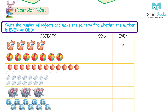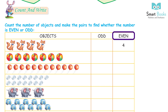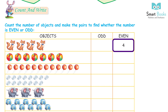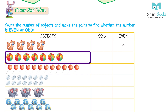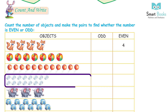Count and write: count the number of objects and make pairs to find whether the number is even or odd. Four squirrels — four is an even number. Seven balls — seven is an odd number. Twelve balloons — twelve is an even number. Fifteen tablets — fifteen is an odd number.